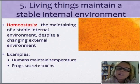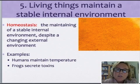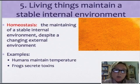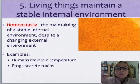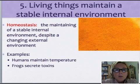The fifth characteristic is maintaining a stable internal environment called homeostasis. Your body maintains a temperature of around 98.6 degrees — that is its homeostasis temperature. Even if it's 70 degrees in the room, or 50 degrees, or freezing, your body will still work very hard to maintain that stable internal environment.